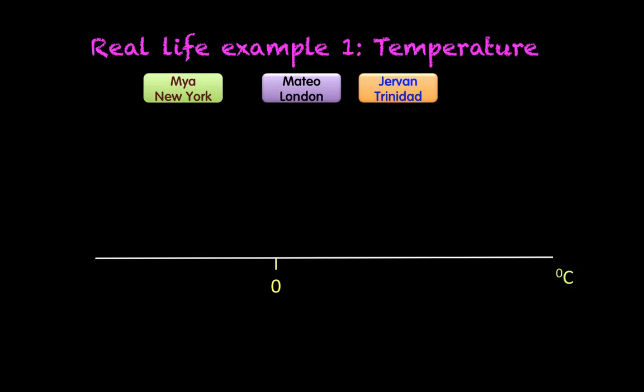So let's look at this real-life example. We're going to be looking at temperature, and there are three of my peeps: Jovan who's in Trinidad, Mateo from London, and Maya in New York. In these three different locations there are three different temperatures. So in Trinidad, Jovan is enjoying a temperature of 33 degrees Celsius.